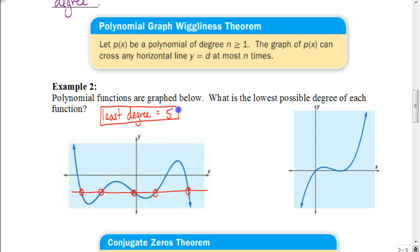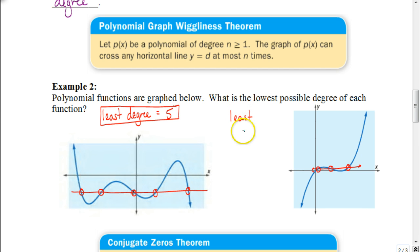So this particular graph isn't related to an equation with a degree less than 5 — the smallest degree would be 5. For the second graph, it's a tighter curve, but drawing a horizontal line gives 1, 2, 3 points of intersection. So the lowest possible degree for that one would be 3.